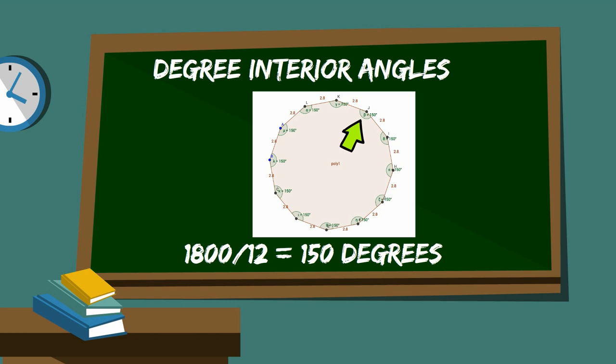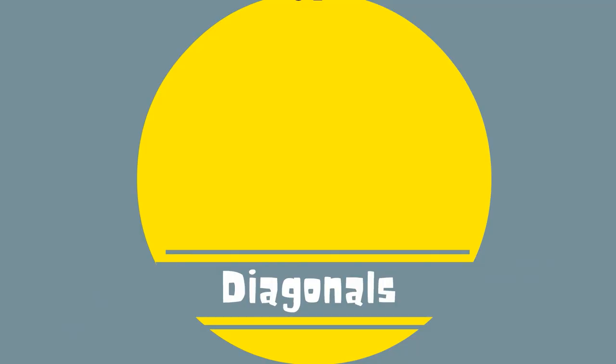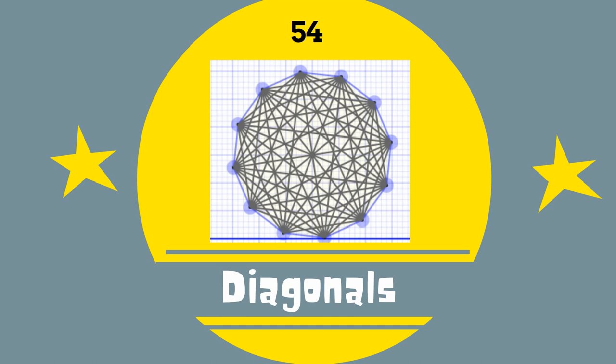The degree measure of each interior angle equals this sum of 1800 divided by 12, which is 150 degrees.